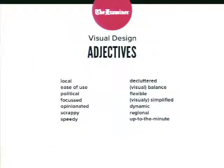We conducted the survey as we did with TakePart, and the answers were really colorful. I can't recommend enough talking to a publishing organization's top writers — you get great adjectives out of them. A major thing they stressed was that they wanted it to be local — highlighting local content. The political side needed to show through. Other words used were: decluttered, flexible, dynamic, regional, and speedy. Speedy was interesting — opening up that conversation revealed that speedy meant they wanted to see a lot of white space.